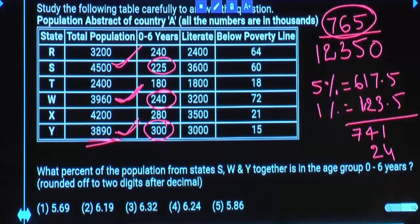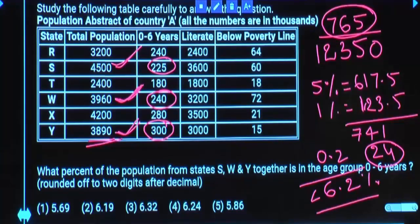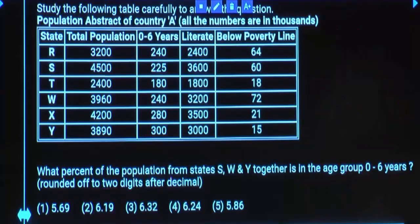Total value is 765. How much should be added to make it 765? The numerator needs 24 more. What is 1%? 123.5. What is 0.1%? 12.35. What is 0.2%? 24.7. But you have less than 24.7, hence this value is less than 0.2%. So the total value should be very close to 6.2% but less than that. How many options do we have? Only one. Before going to start your solution, you should know the way to solve it, and that depends on options first.